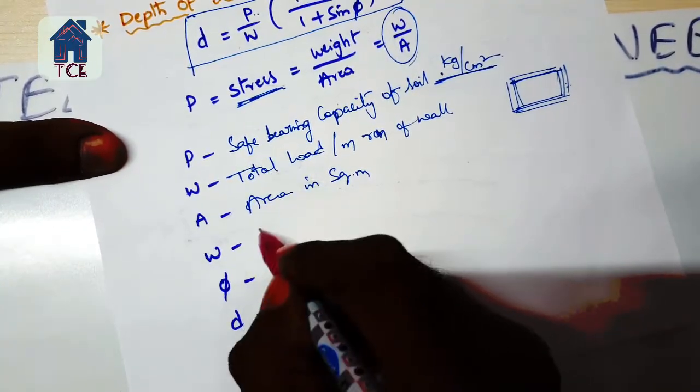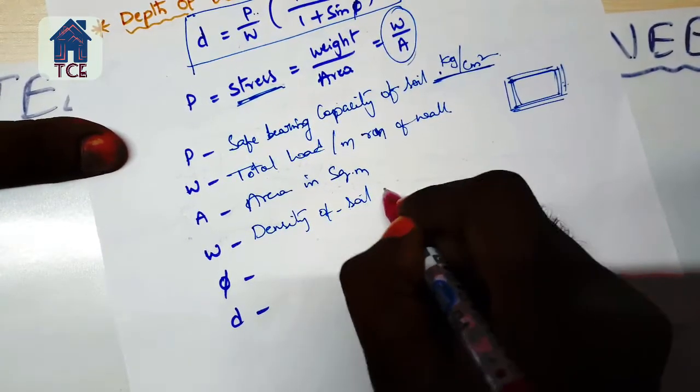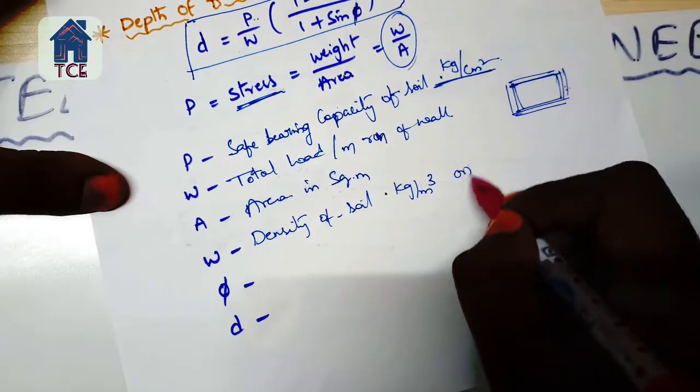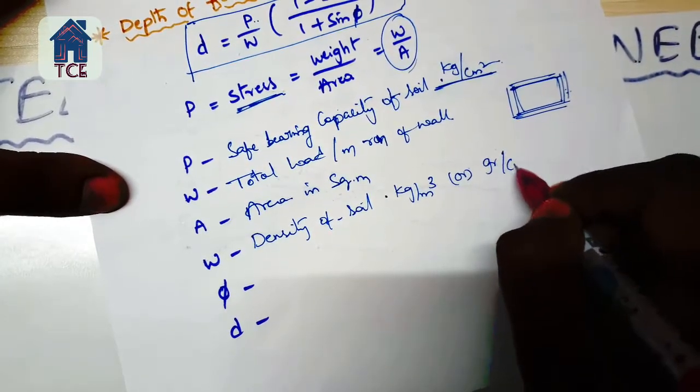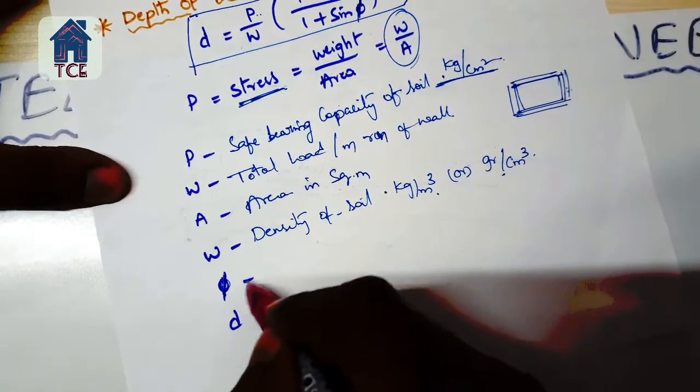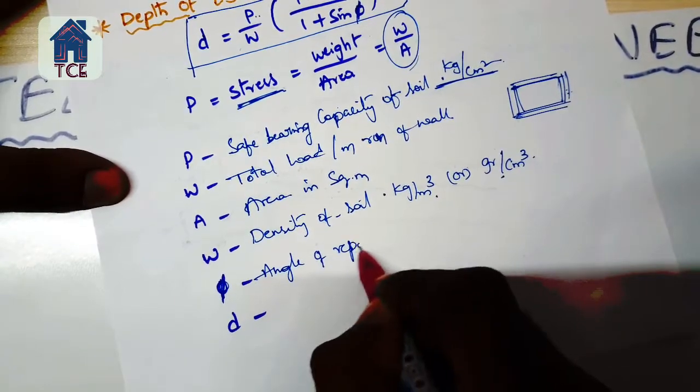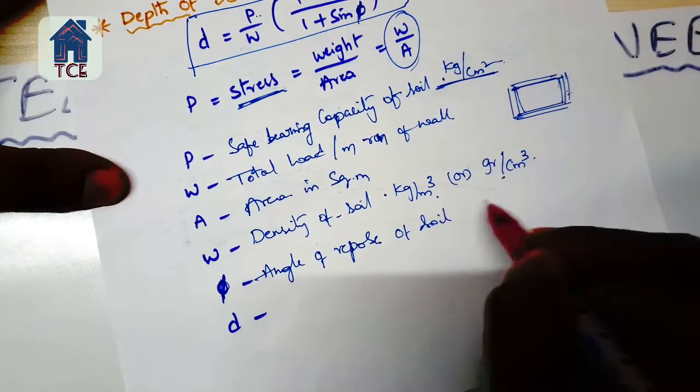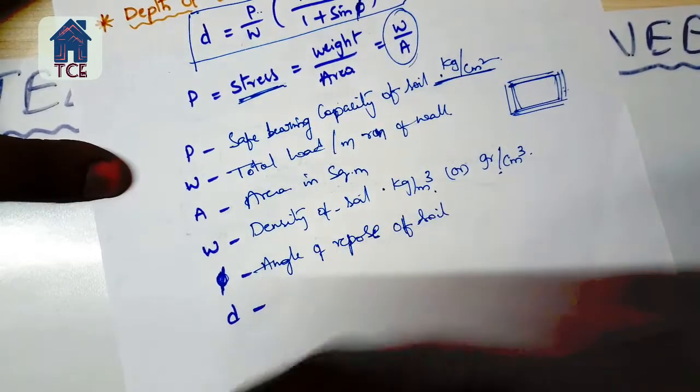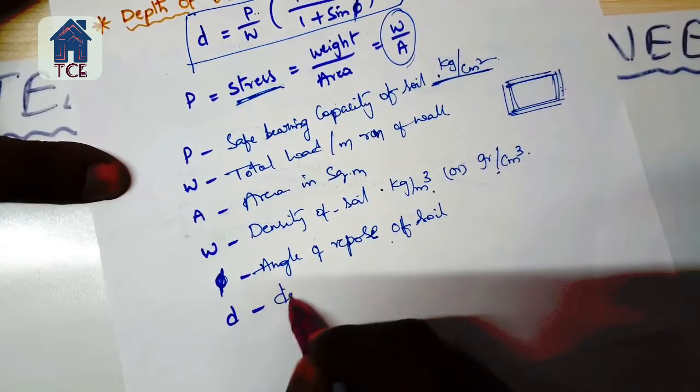We also need density of the soil. I covered this in the last class - it's measured in kg per meter cube or grams per centimeter cube. Then there's the angle of repose of the soil. As the angle of repose increases, the safe bearing capacity of the soil decreases. The last factor is the depth of foundation itself, which is determined by these parameters and the zone of influence in the soil.